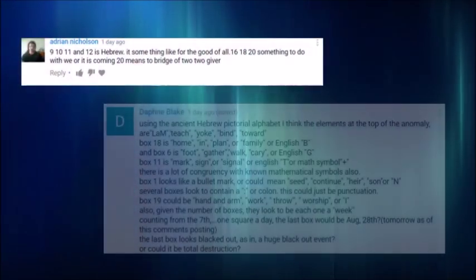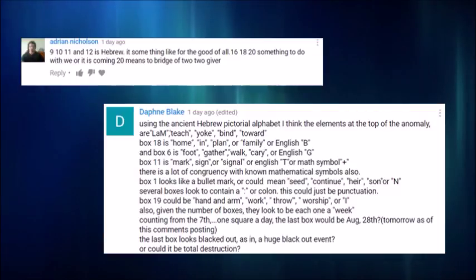This is an interpretation in Hebrew. The elements at the top of the anomaly are lamb, L-A-M, teach, yoke, bind, toward. Box 18 is home, N, plan, R, family, R, English, B. And box 6 is foot, gather, walk, carry, R, English, G. Box 11 is mark, sign, R, signal, R, English, T, R, the math symbol, plus. Box 1 looks like a bullet mark, or could mean seed, continue, air, sun, R, N.